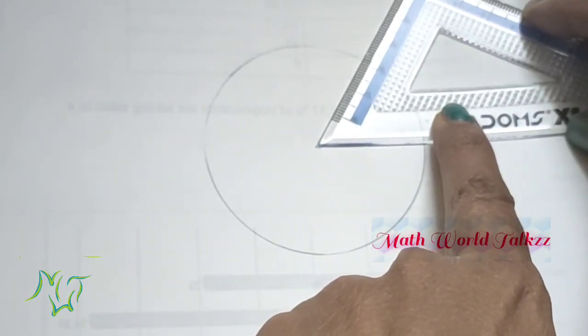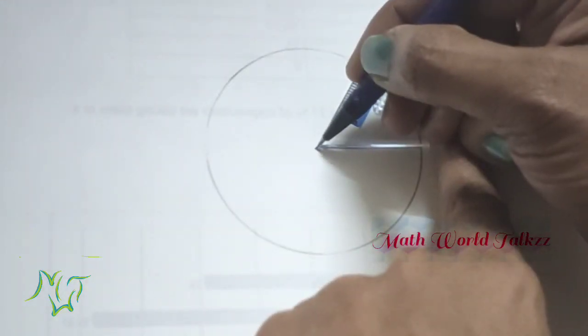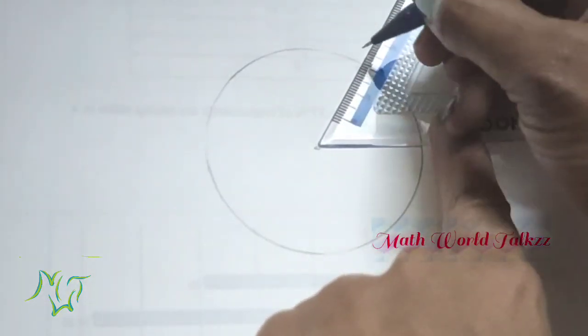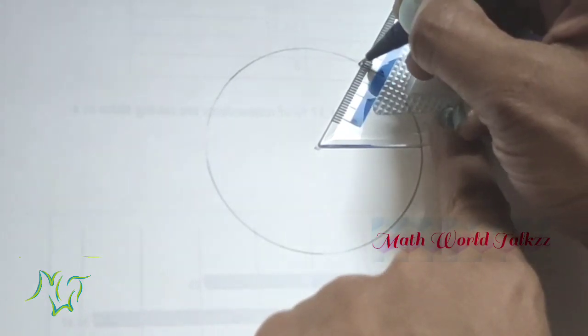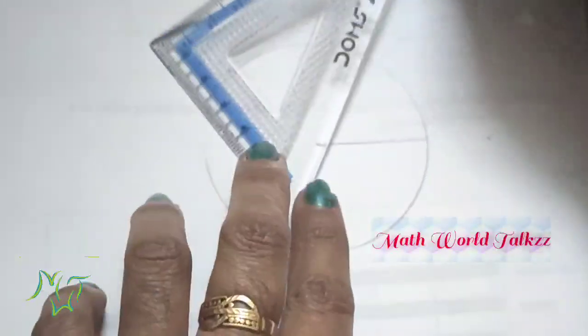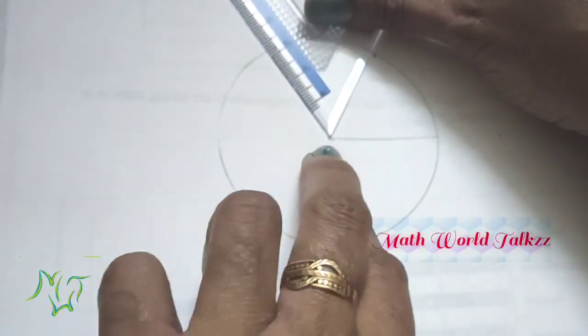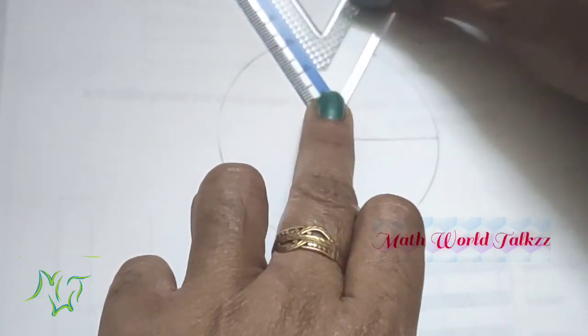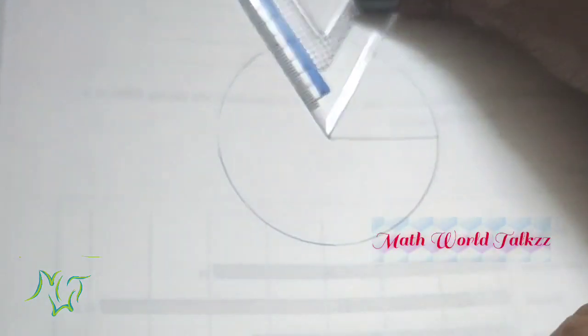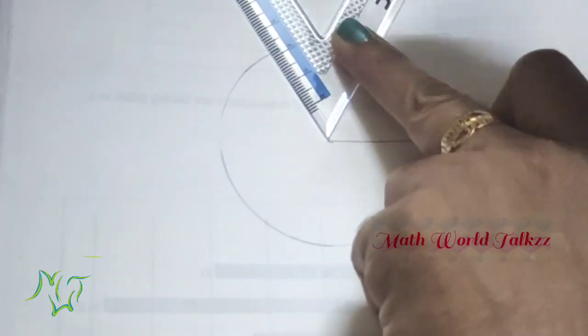Just mark a point here. There should be a gap. So here, take a point, then keep the set square like this - it should be on the center - and keep like this, then mark a point here.